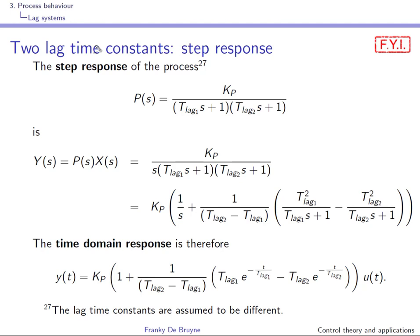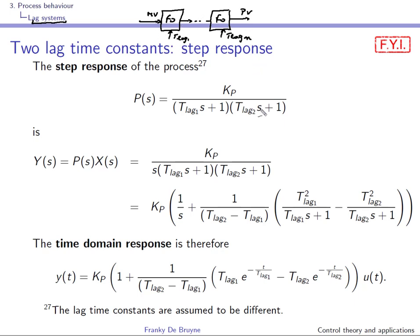What we'll consider now in the next subsection are lag systems, and lag systems are really first order systems that are in series. So you have a number of first order systems, and if you put them in series you have an nth order lag system. Each first order comes with its own lag time constant, and if you have n first orders in series you have an nth order lag system.